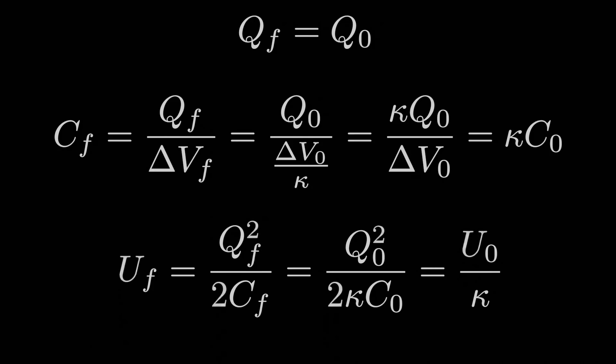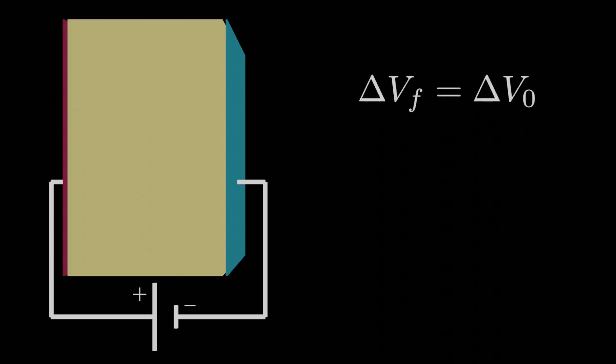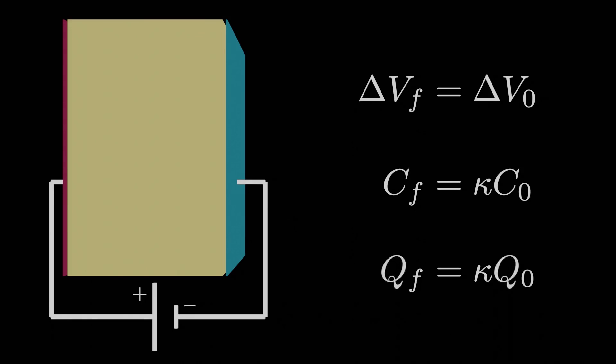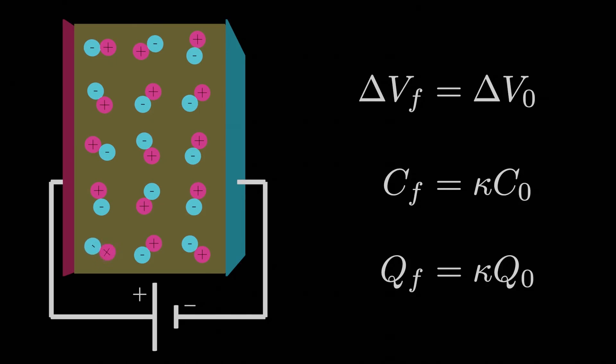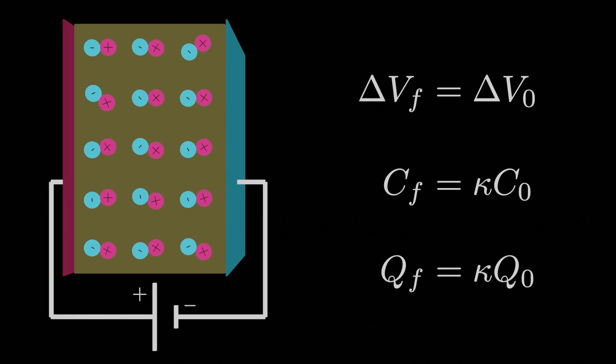That concludes all our properties of isolated capacitors. In the case that our capacitor isn't isolated — consider if the capacitor is connected to a battery and we insert a dielectric while it's connected — the potential difference across the capacitor stays the same, being whatever the potential difference across the battery is. But the capacitance increases to kappa times C0. Since we don't have an isolated capacitor, the charge doesn't stay constant; instead, the charge increases to kappa times Q0, because the attracting dipoles in between allow the capacitor to support more charge from the battery across its plates.